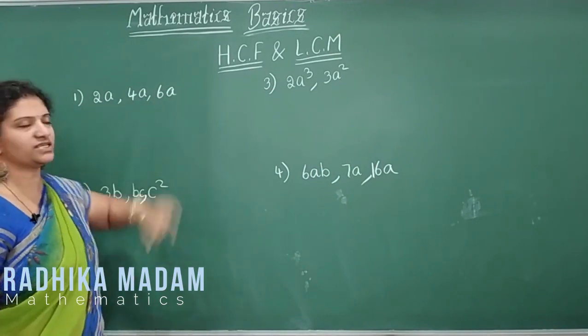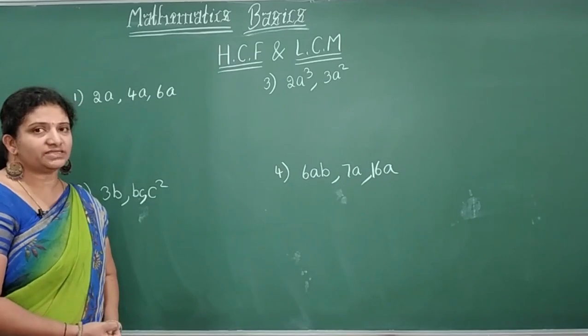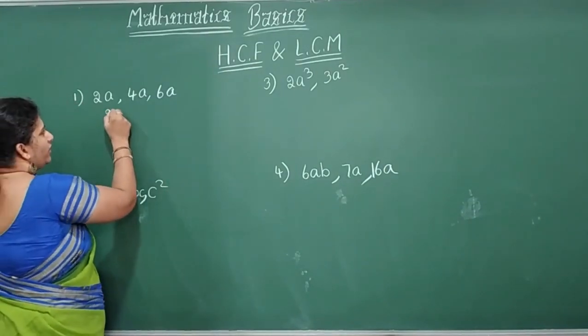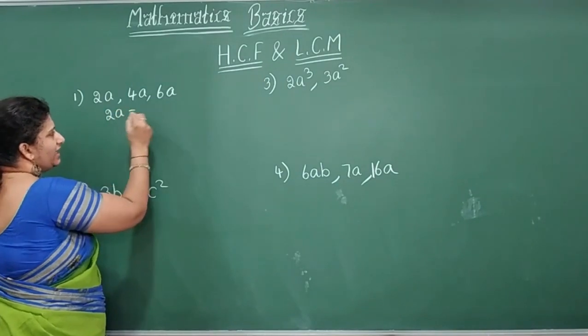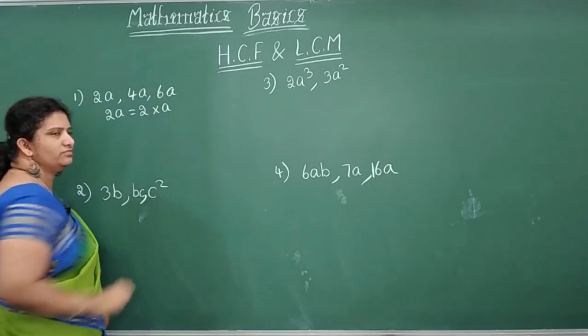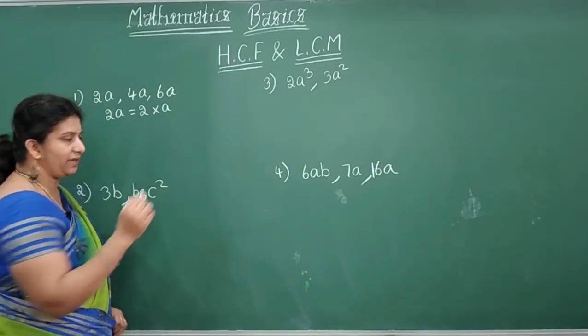So 2A, 4A, 6A there. How do you split these numbers and how do you find HCF and LCM? So now look here, 2A, I can write it as 2 into A. Yes or no? 2A can be written as 2 into A.